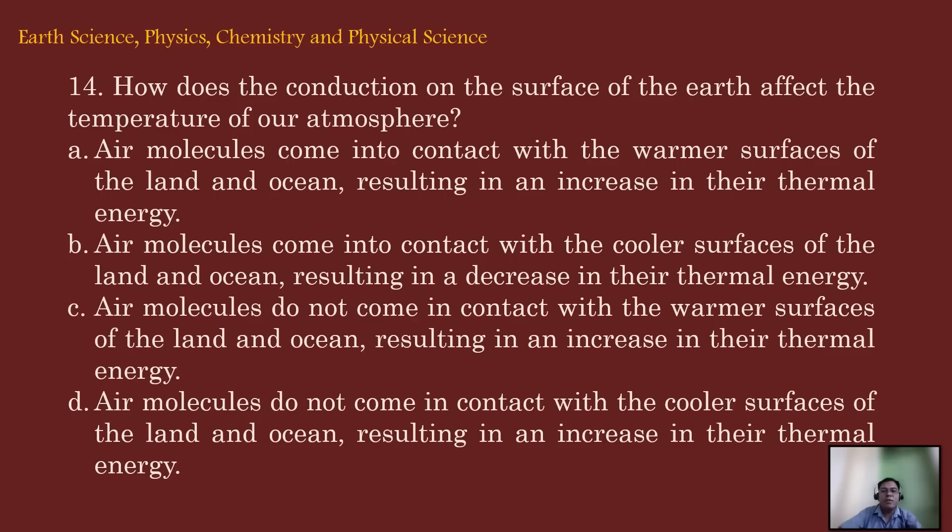Let's move on to item number 14. How does the conduction of the surface of the earth affect the temperature of our atmosphere? A. Air molecules come into contact with the warmer surface of the land and ocean, resulting in an increase of their thermal energy. B. Air molecules come into contact with the cooler surface of the earth and ocean, resulting in a decrease in their thermal energy. Letter C. Air molecules do not come into contact with the warmer surfaces of the land and ocean, resulting in an increase in their thermal energy. And D. Air molecules do not come into contact with the cooler surfaces of the land and ocean, resulting in an increase in their thermal energy.